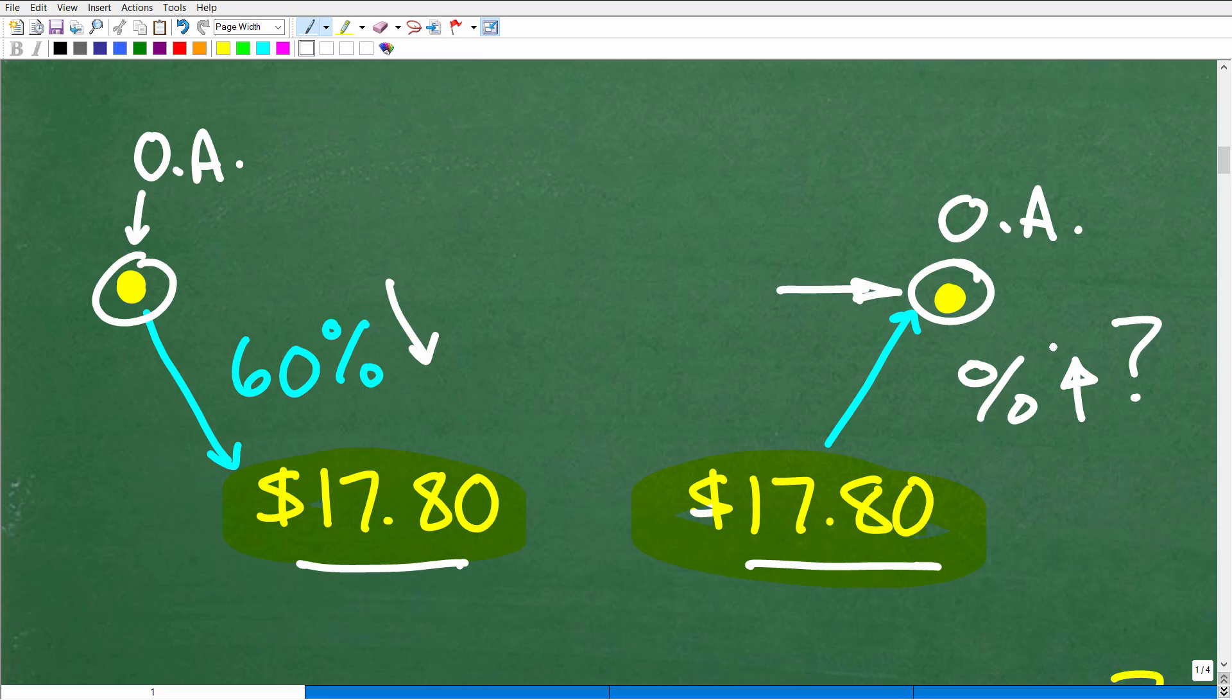To go from $17.80 to get back to the original amount, whatever that is, we're looking for the percent of increase. What is the percent of increase from this starting point, $17.80, to get back to the original amount? It's very helpful to have some sort of model. Make sure you lay things out so your teacher can at least somewhat follow your logic and understand what's going on.